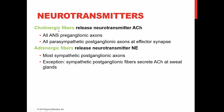All parasympathetic post-ganglionic axons and all pre-ganglionic axons of both the sympathetic and parasympathetic divisions are cholinergic fibers — they release acetylcholine, hence the name cholinergic. Most sympathetic post-ganglionic axons, except those going to sweat glands, are adrenergic fibers because they release norepinephrine — which the British call adrenaline — hence adrenergic.